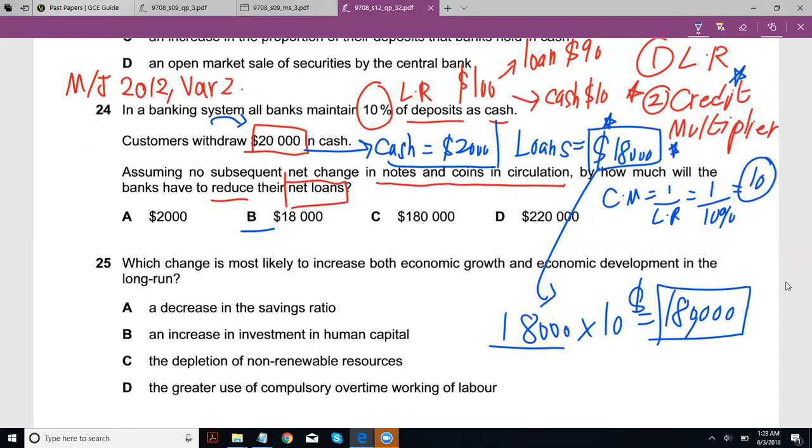So this is the amount you will loan out when someone deposits $20,000 in cash. This will be the net loan of the entire banking system, not just one bank. One bank would just loan out $18,000, but for the entire banking system it would be $180,000 if someone deposits $20,000 in cash.